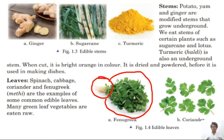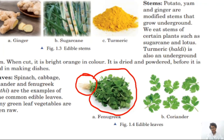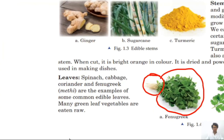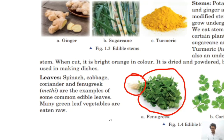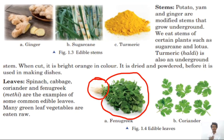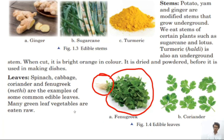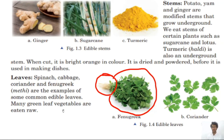Spinach, cabbage, coriander, and fenugreek are examples of some common edible leaves. Many green leaves are eaten raw — raw means uncooked. For example, we can eat coriander raw. However, some green leaves are supposed to be cooked. Now let's move on to our next page — open page number four.